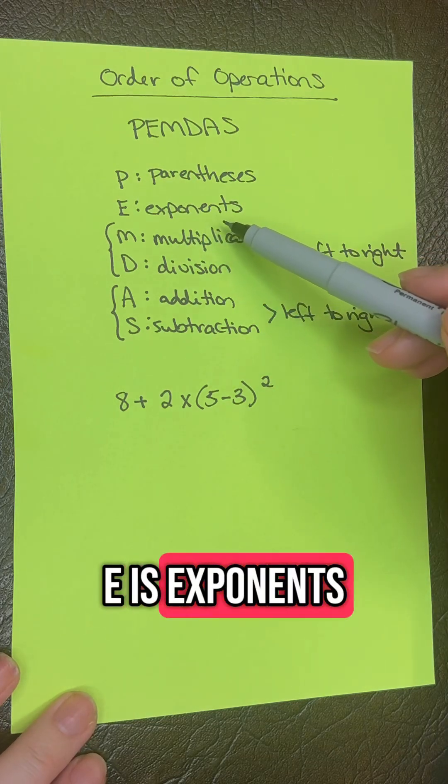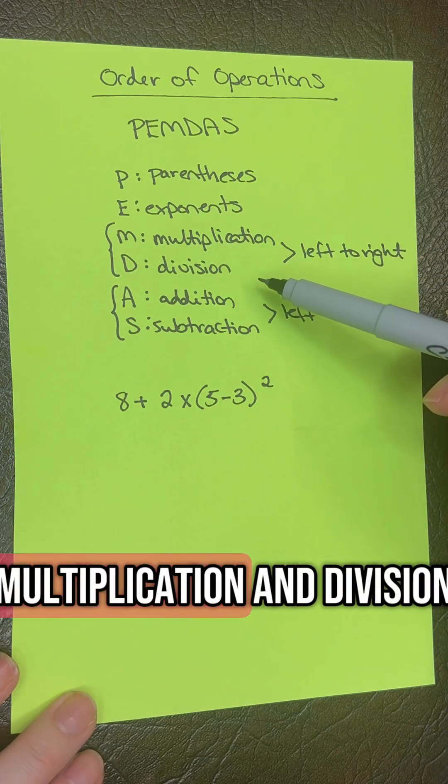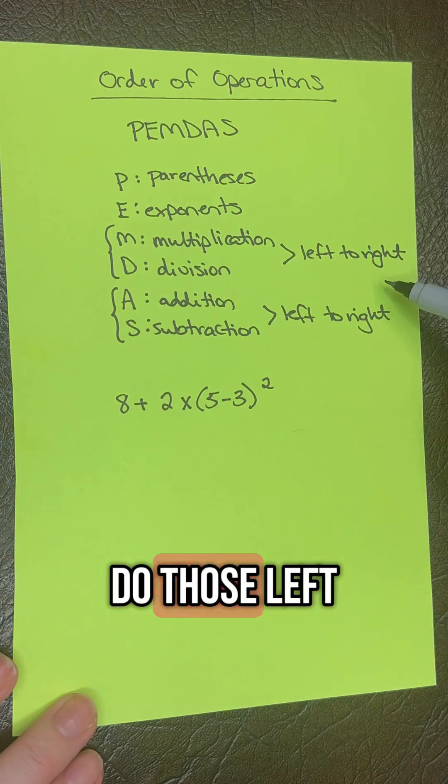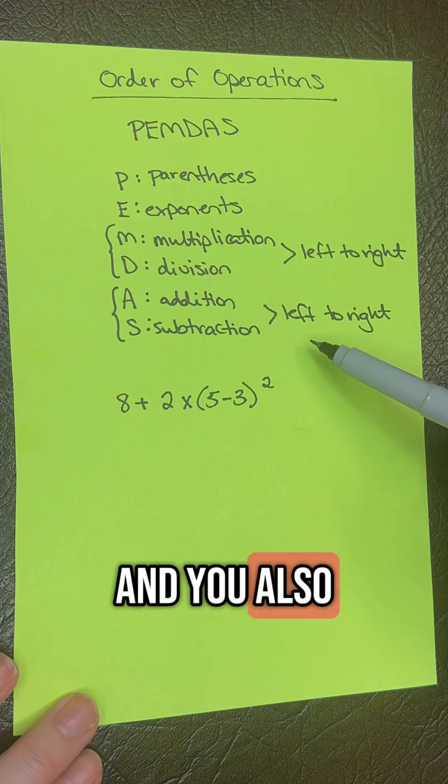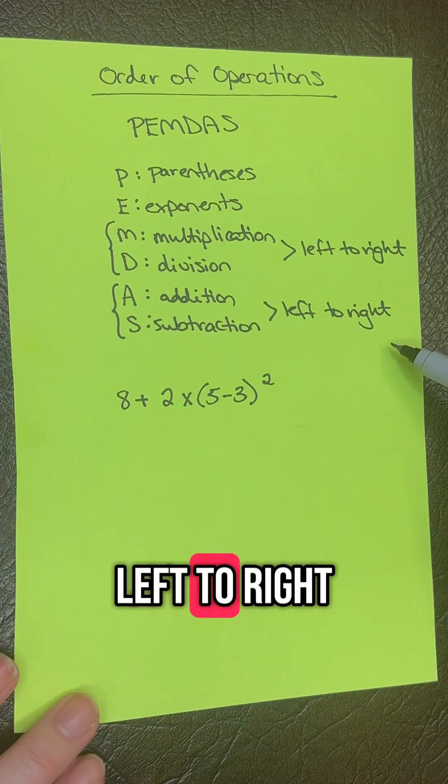E is exponents, M and D are multiplication and division which you do left to right, and A and S are addition and subtraction which you also do left to right.